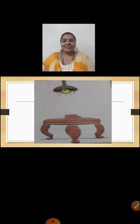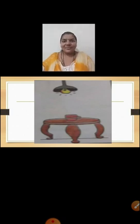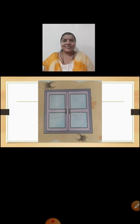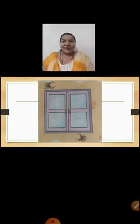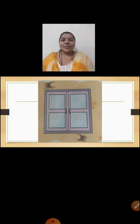Now look at this picture. Yes, we can see a lamp above the cup. Look at this picture — it is a picture of a window. We can see here pictures of spiders. One spider is above the window and the other spider is below the window.